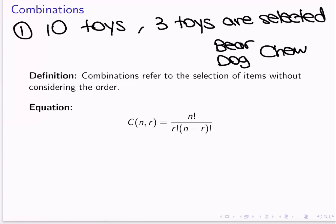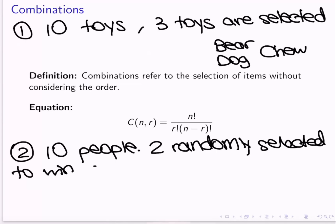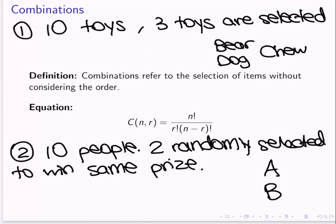What about another example? Let's say there are ten people and two are randomly selected, and they both win the same prize — maybe they both win an iPad. And let's say the iPads are exactly identical: the same color, same make and model, exactly the same as each other. If that is the case, we actually wouldn't care what order the people were selected in. If person A gets selected first then person B, that's the same as person B selected first then person A, because it's still the same two people winning the same prize.